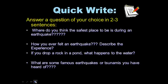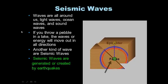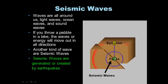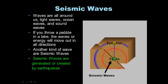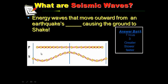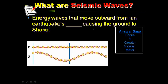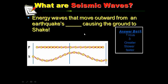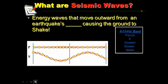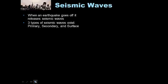Waves are all around us: light waves, ocean waves, and sound waves. If you throw a pebble in a pond or lake, the waves of energy will move out in all directions. That's kind of like when an earthquake goes off — it releases seismic waves that move out in all directions, like in this diagram here. Seismic waves are generated by earthquakes, and it's these waves that shake the ground. For your notes, question on the left-hand side, answer on the right-hand side — use the answer bank to determine which words best complete the sentence.